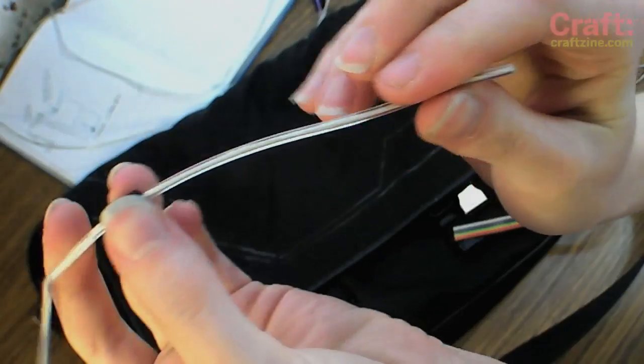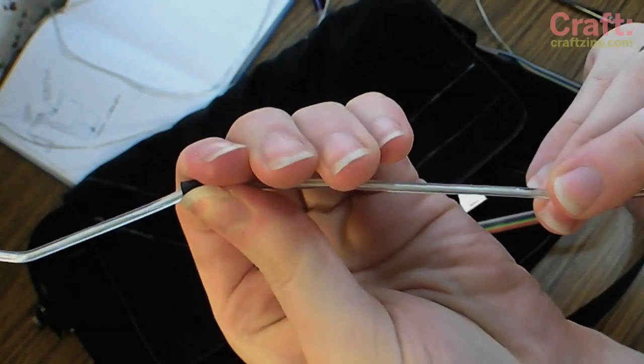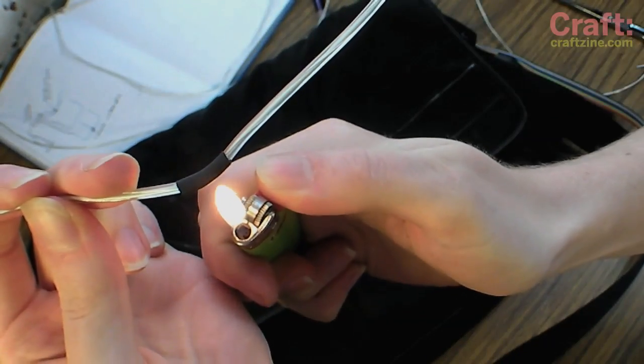You can use a small piece of heat shrink tubing to black out sections of the EL wire. This is a really easy way to make interrupted lines in your design.